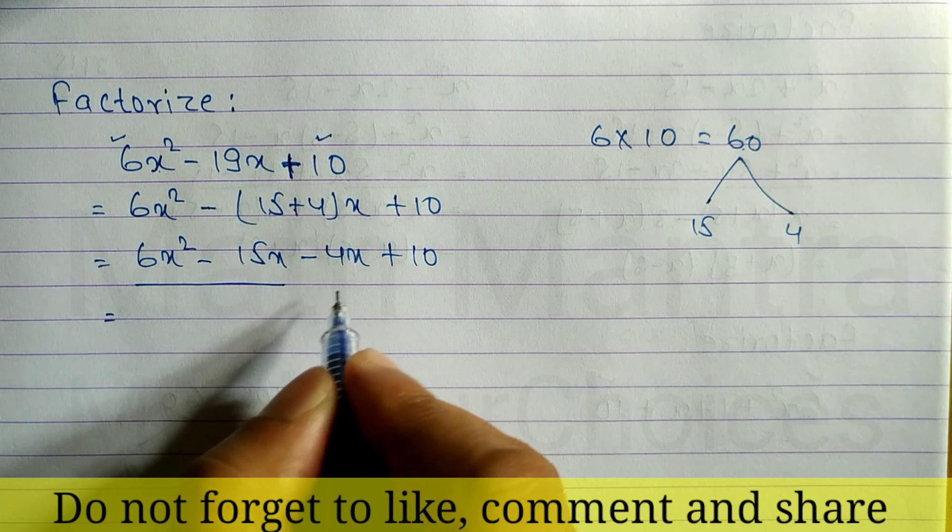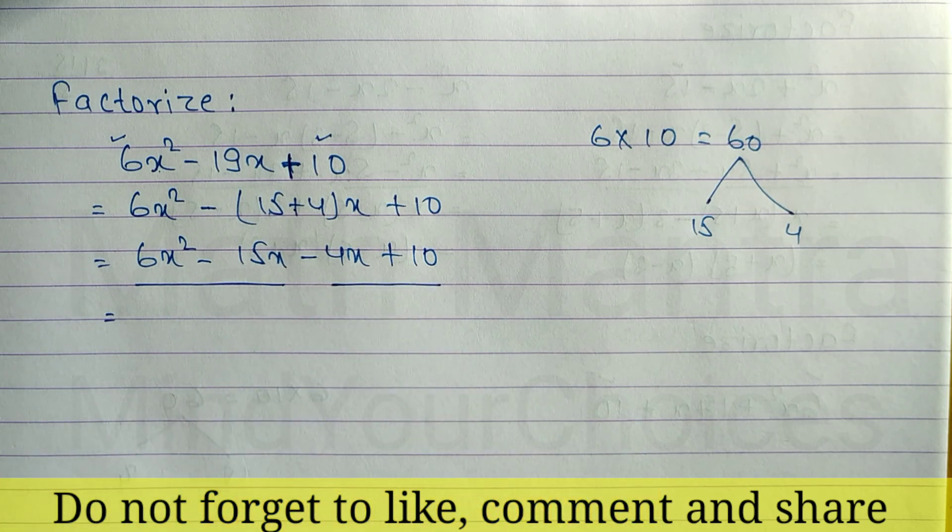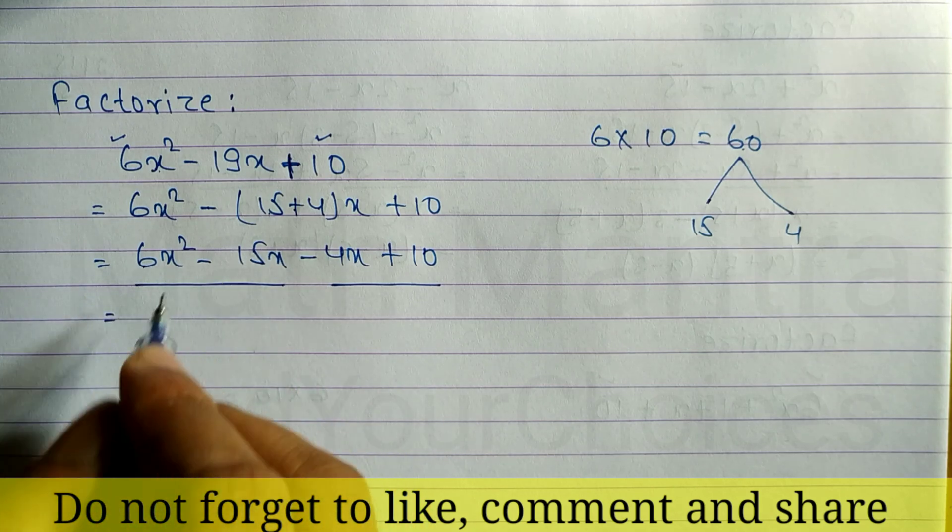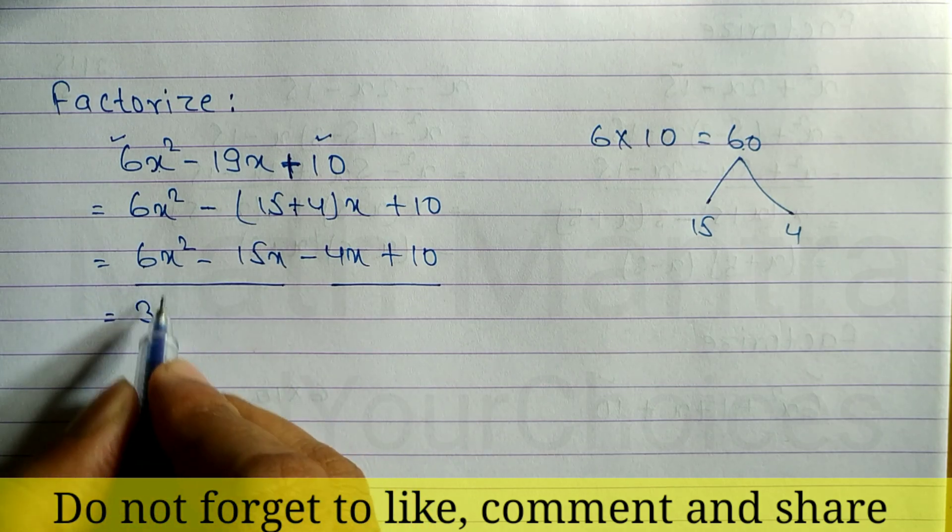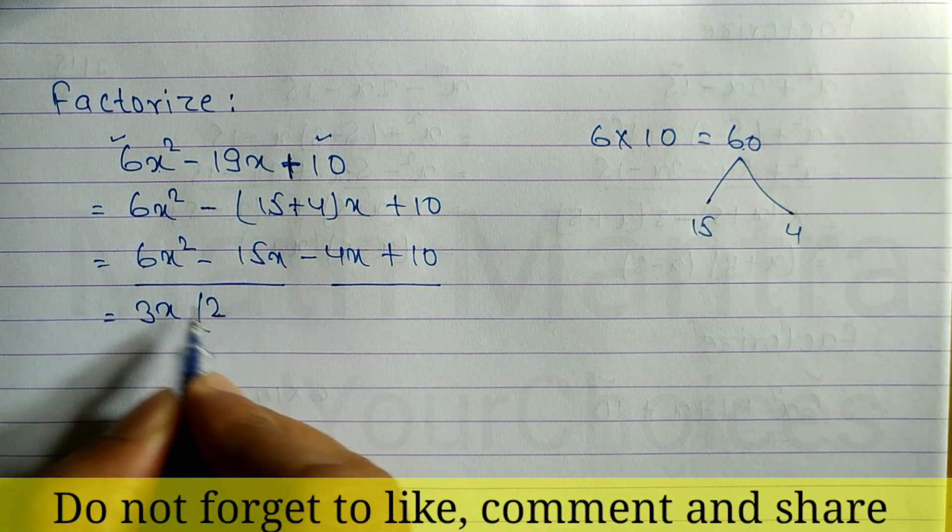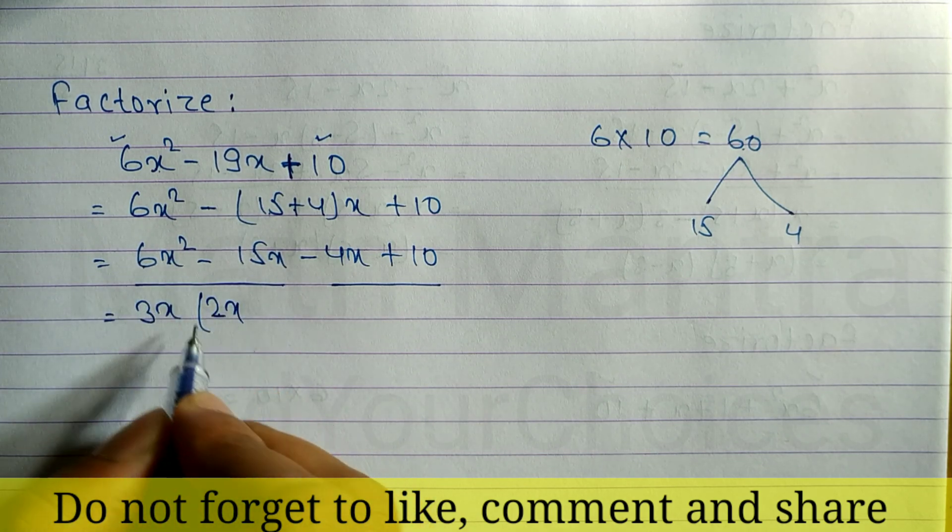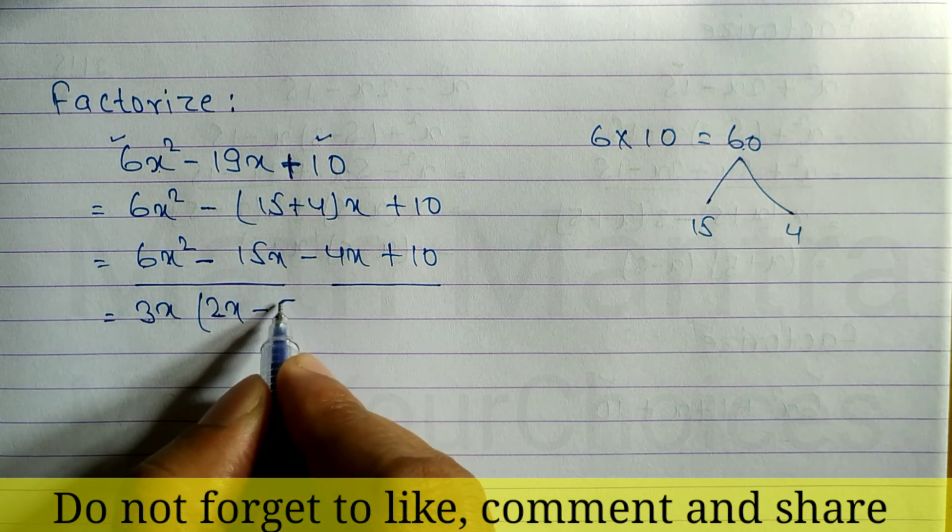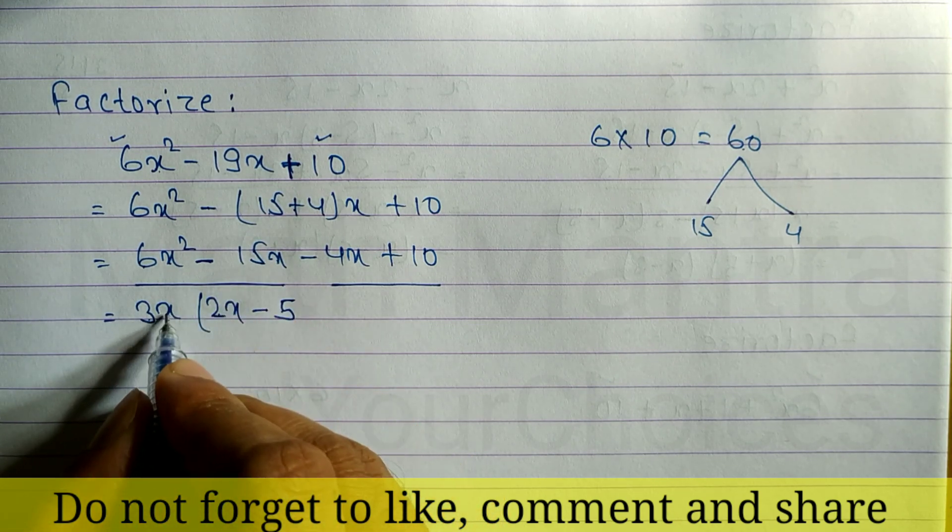From the first two terms, we have to take common, and from last two terms, we have to take common. In the previous video, I already taught you. From 6 and 15, here 3 is common, and from x² and x, x is common. Remaining is 2x, and 3 times which number gives 15? 3 times 5 equals 15.